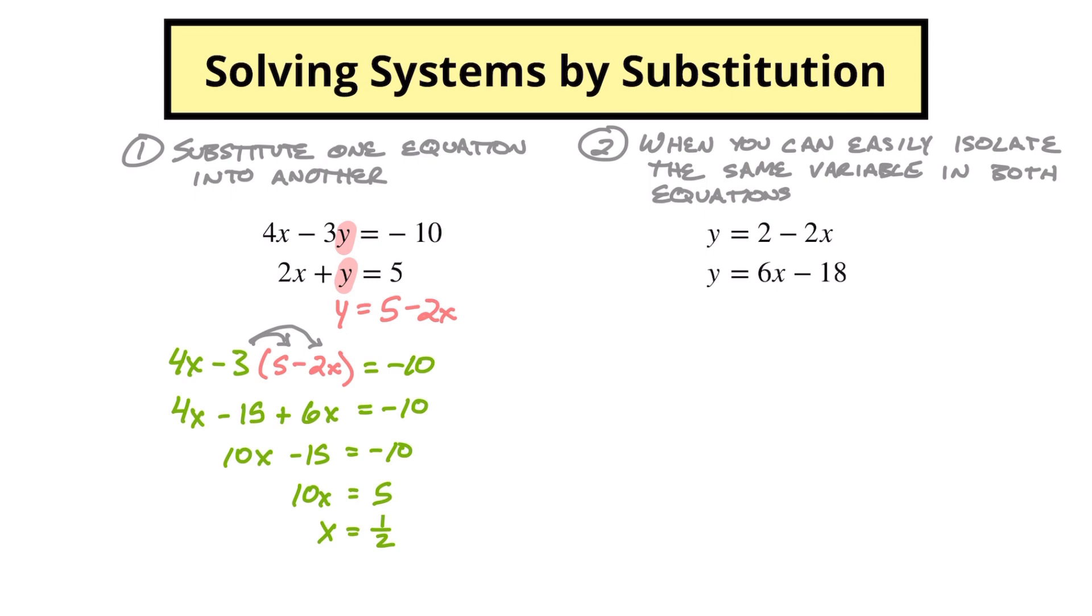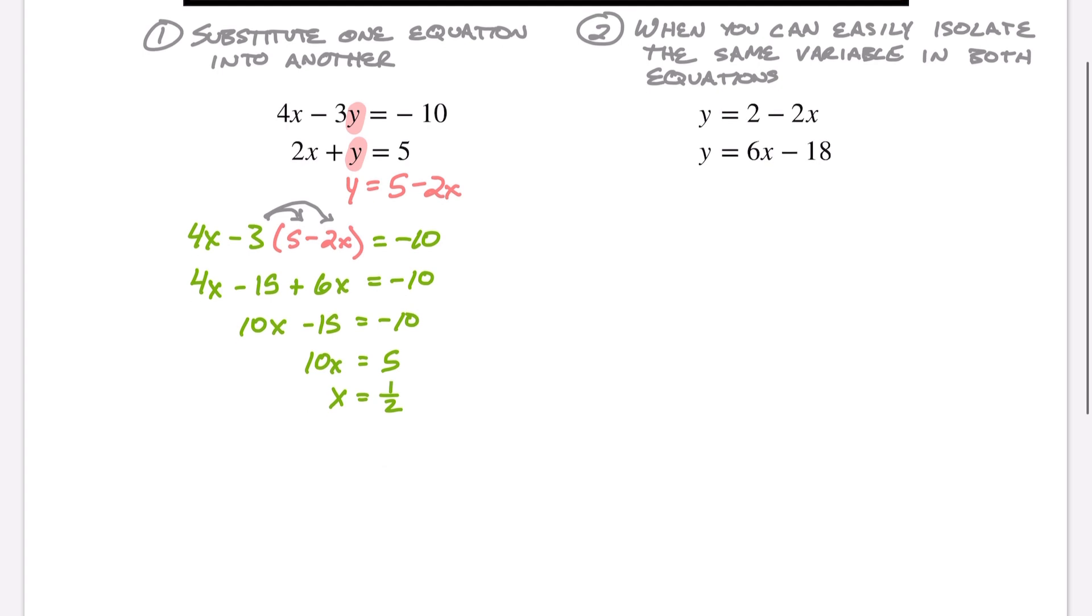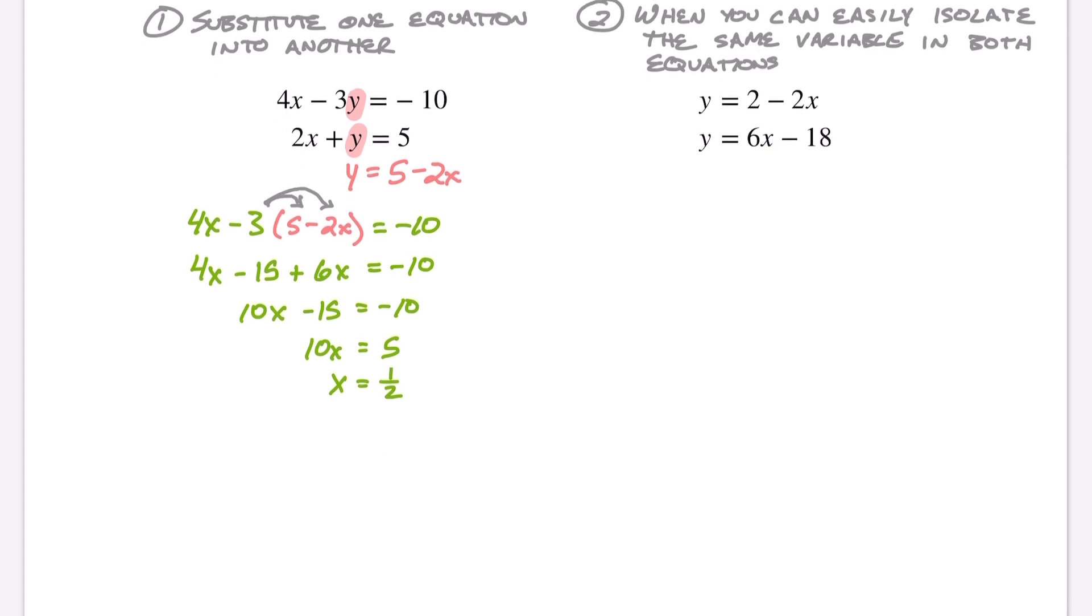Now what do we do with that one half? Now we need to see what is the y value. So we can do this in one of two ways. We can substitute this x into this first equation or we can substitute it into the second equation. So if we put it into the first equation, that will be 4(1/2) - 3y = -10.